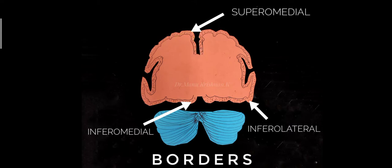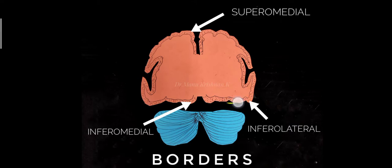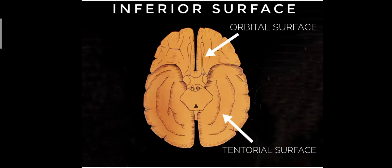Always remember this is the coronal section. As you run down, you can see an angle — this border is called the inferolateral border. And this one over here is termed as the inferomedial border. So there are three borders: the superomedial border, the inferolateral border, and the inferomedial border.